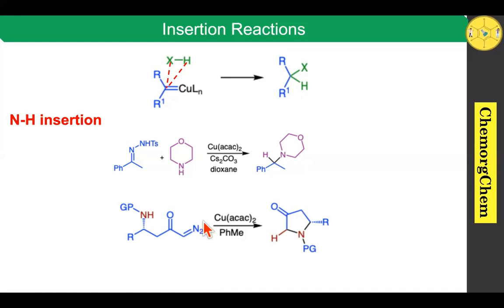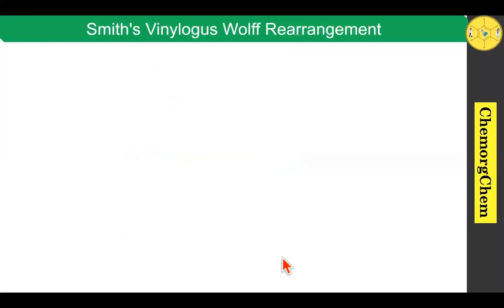When you use copper acetylacetonate here, the diazo compound readily generates copper carbene; after formation of the copper carbene, intramolecular N–H insertion takes place, which produces the five-membered heterocyclic compound.